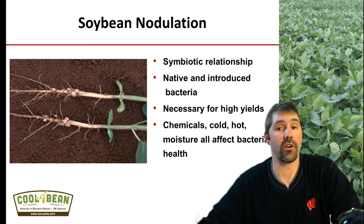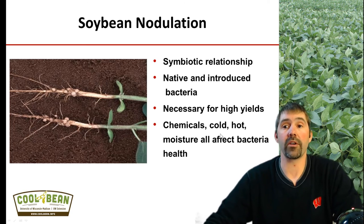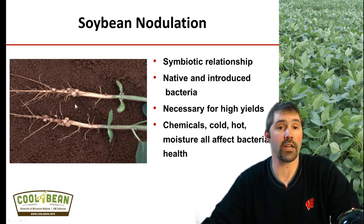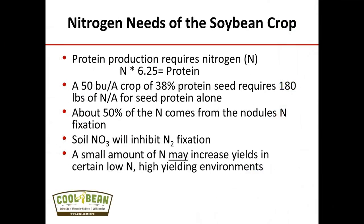Maximum or good soybean nodulation is necessary for high yields, but you have to be careful because there are some chemicals and many weather conditions that can really affect bacteria health and that good nodulation early at the V2 growth stage. A soybean plant requires a tremendous amount of nitrogen from two different sources. Protein production required — N times 6.25 equals that protein content. A 50 bushel per acre soybean crop at 38 percent protein requires 180 pounds of nitrogen for seed protein alone. About 50 percent of the nitrogen comes from the nodules and the other 50 percent comes from soil nitrate or other forms of N fixation. Much of the data we see here in Wisconsin often shows that the addition of nitrogen into a soybean management system really does not pay off beneficially towards the grower's bottom line.